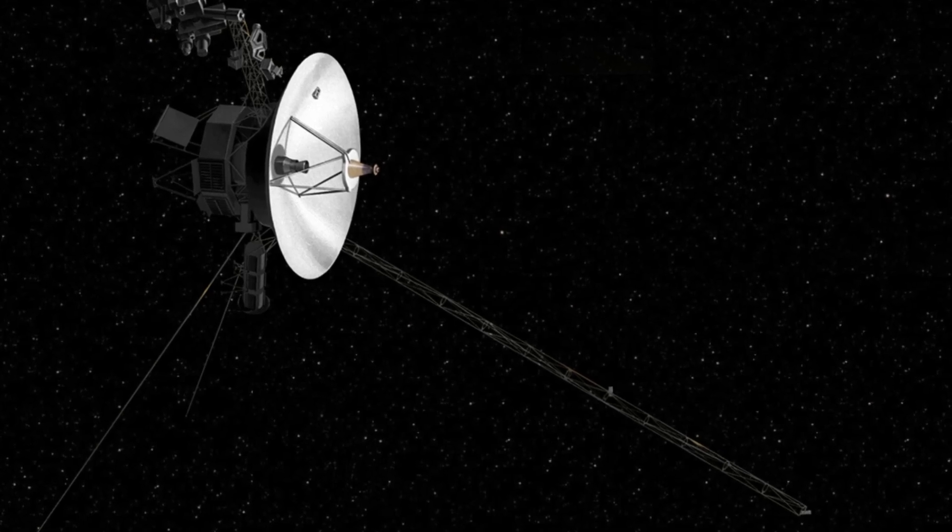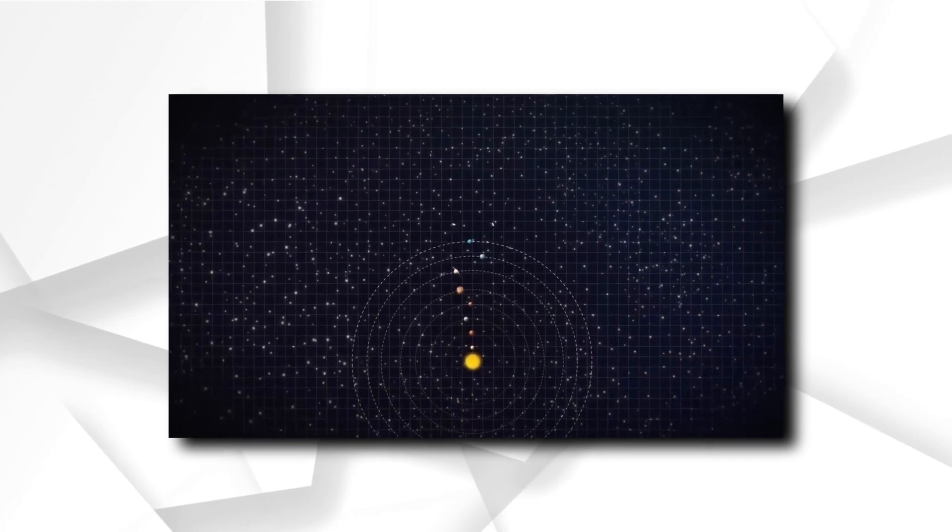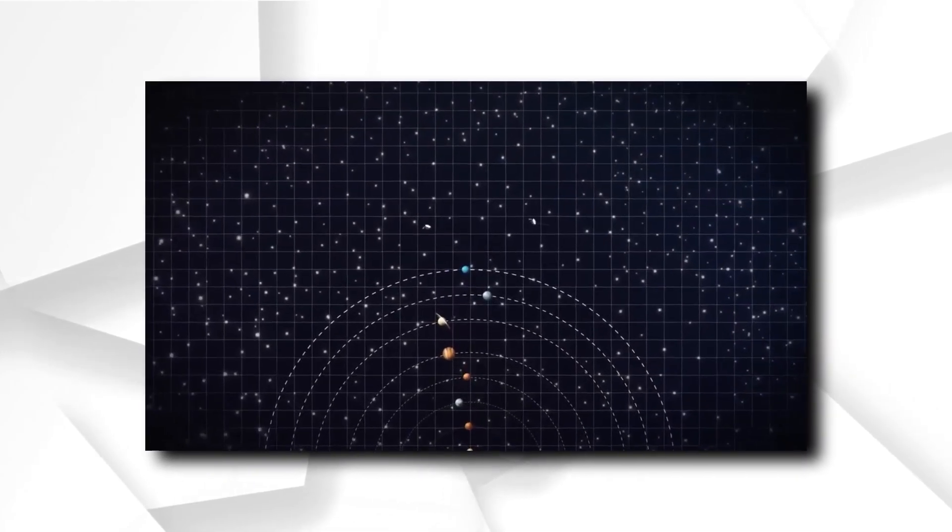NASA launched the Voyager 2 spacecraft on August 20, 1977, with the goal of studying the extrasolar planets and interstellar space.